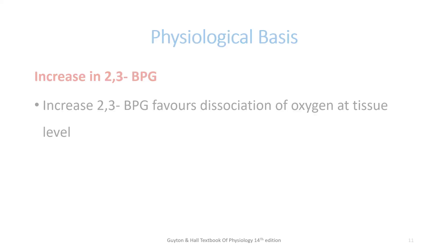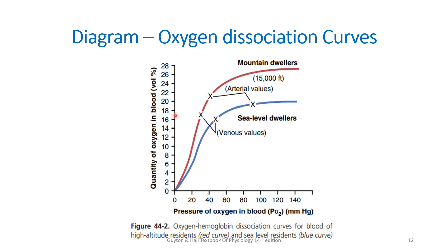To increase the release of oxygen at the tissue level, there is increased 2,3-BPG. 2,3-BPG decreases the affinity of hemoglobin to oxygen, so at the tissue level it favors more release of oxygen — even at smaller partial pressures of oxygen, more oxygen is released at the tissue level. We can also draw a diagram showing the oxygen dissociation curve for sea level dwellers versus mountain dwellers. For example, at a partial pressure of oxygen around 60, sea level dwellers have an oxygen content of only around 18, whereas for mountain dwellers at the same PO2, around 24–26 percent oxygen is present in their blood.